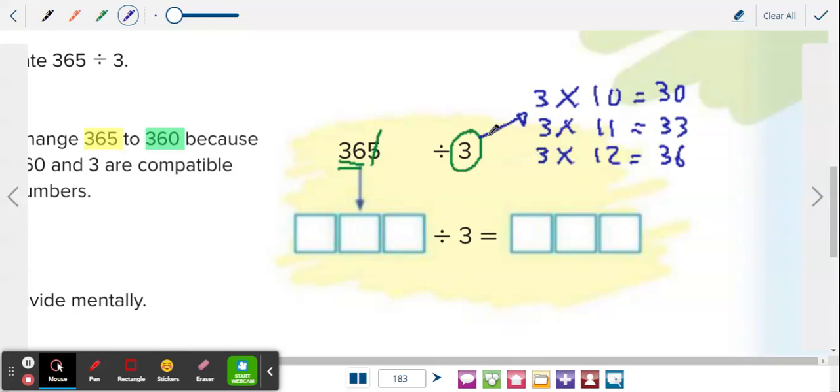So the number 3 is compatible to 36 because there is one number in that table that gives you exactly 36.